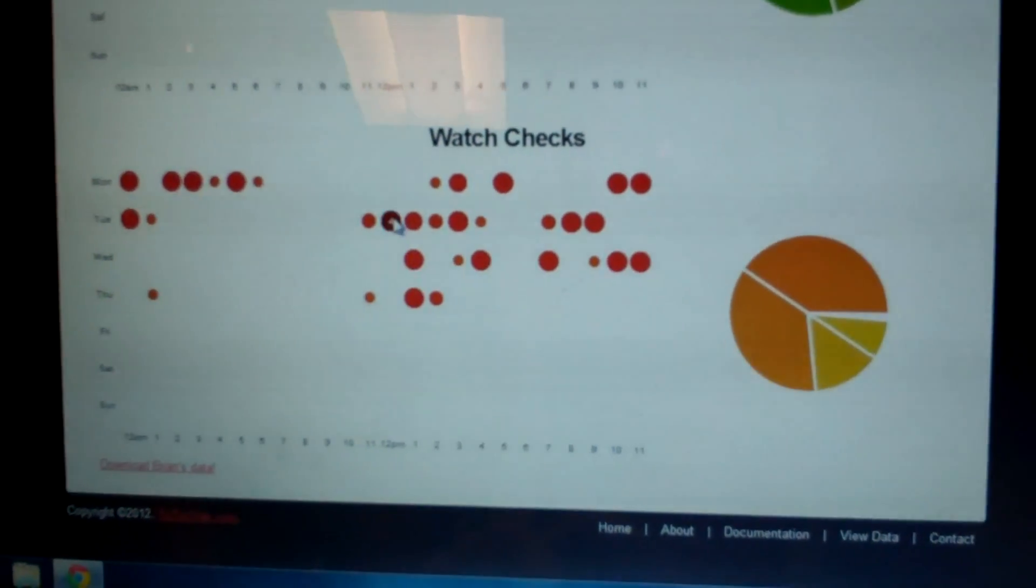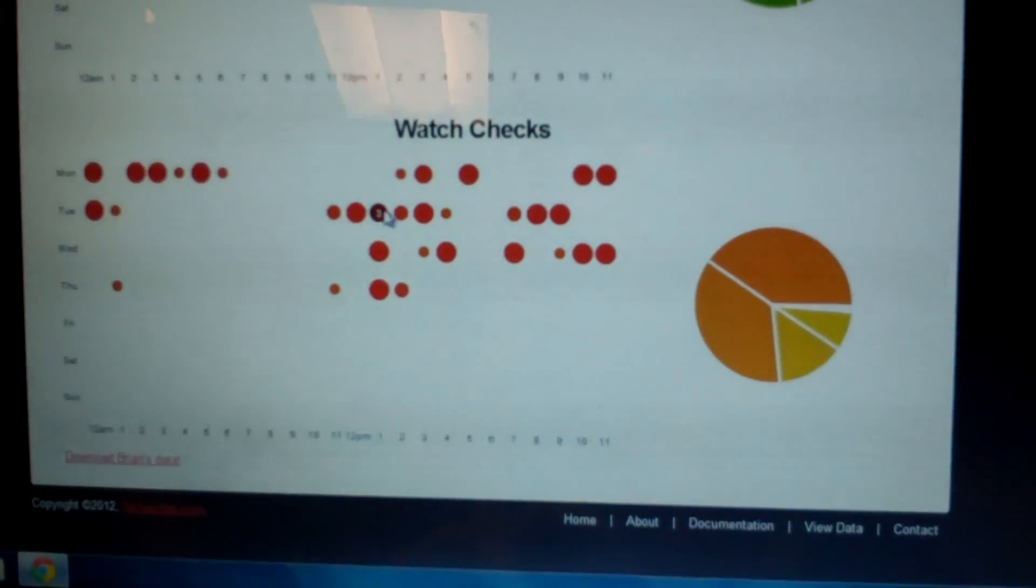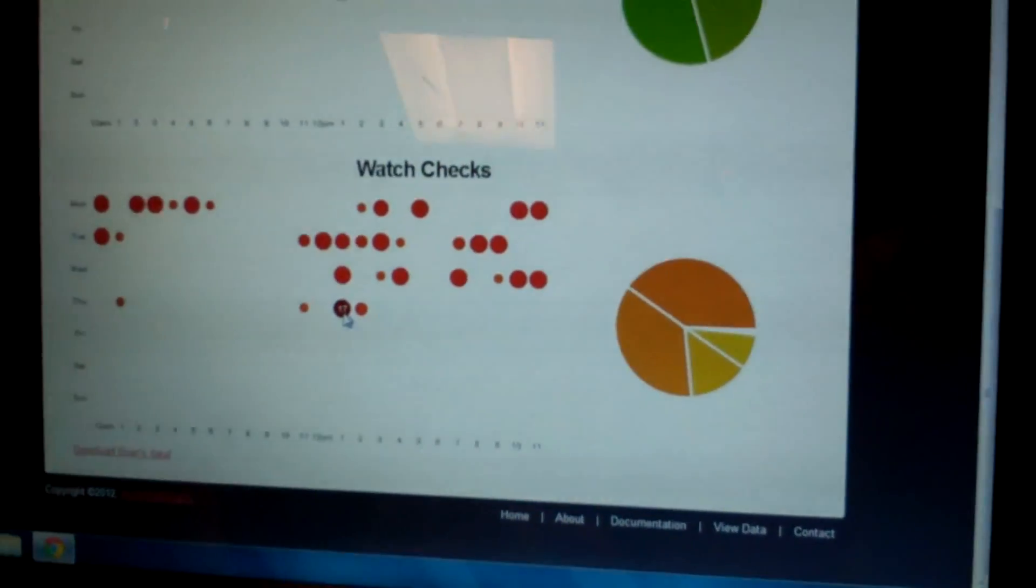And you can also keep track of, for instance, around this time is when I would go to class. These, where there's large time checks, was also right at the beginning of a class. So you can tell pretty well exactly what events have been happening during the day based upon how often you checked your watch or how far off your time perception was.